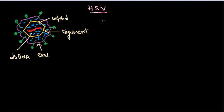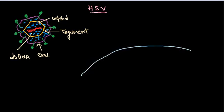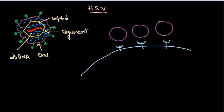Once this virus reaches the target cell, there are receptor interactions between the viral protein molecules and the host cell receptors. The host cell has receptor molecules on its surface, and the virus attaches via these receptors. Due to this interaction, the virus particles are internalized — the virus fuses with the host cell membrane.